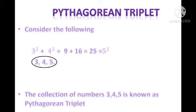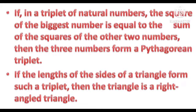From this we can say that the square of the biggest number, 5, is equal to the sum of the squares of the other two numbers, 3 and 4. If in a triplet of natural numbers the square of the biggest number is equal to the sum of the squares of the other two numbers, then the three numbers form a Pythagorean triplet. If the lengths of the sides of a triangle form such a triplet, then the triangle is a right triangle.